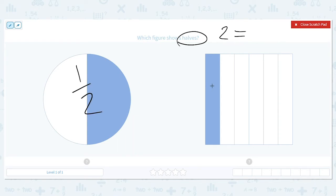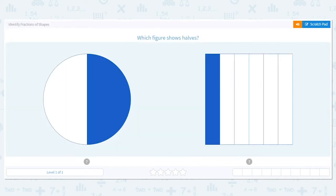But look at this one. This one I have one, two, three, four, five, six. So we would say that each of these represents one sixth. So which one shows halves? The circle.